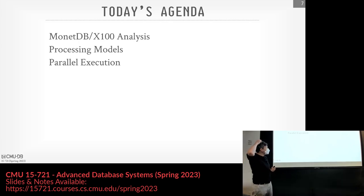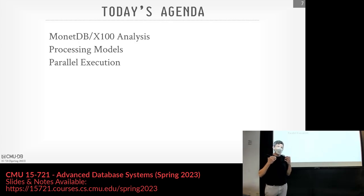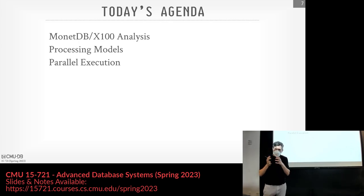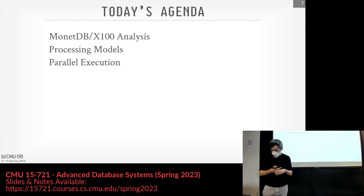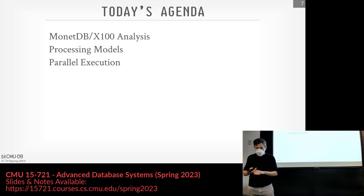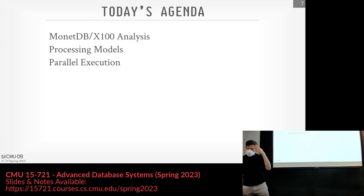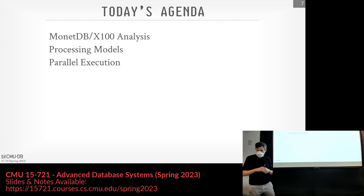Today's class, we're going to talk about the MonetDB X100 paper you guys read. To me, yes it is from 2005, but as I said with the other papers we've read, these are the fundamental papers that really lay out the key ideas that are the backbone of the design of modern OLAP systems. VectorWise — this paper is very influential. Then we'll spend more time talking about different processing models: how do you actually organize the flow of data throughout the DAG and the query plan. And we'll finish up talking about the basic levels of parallel execution you can have.